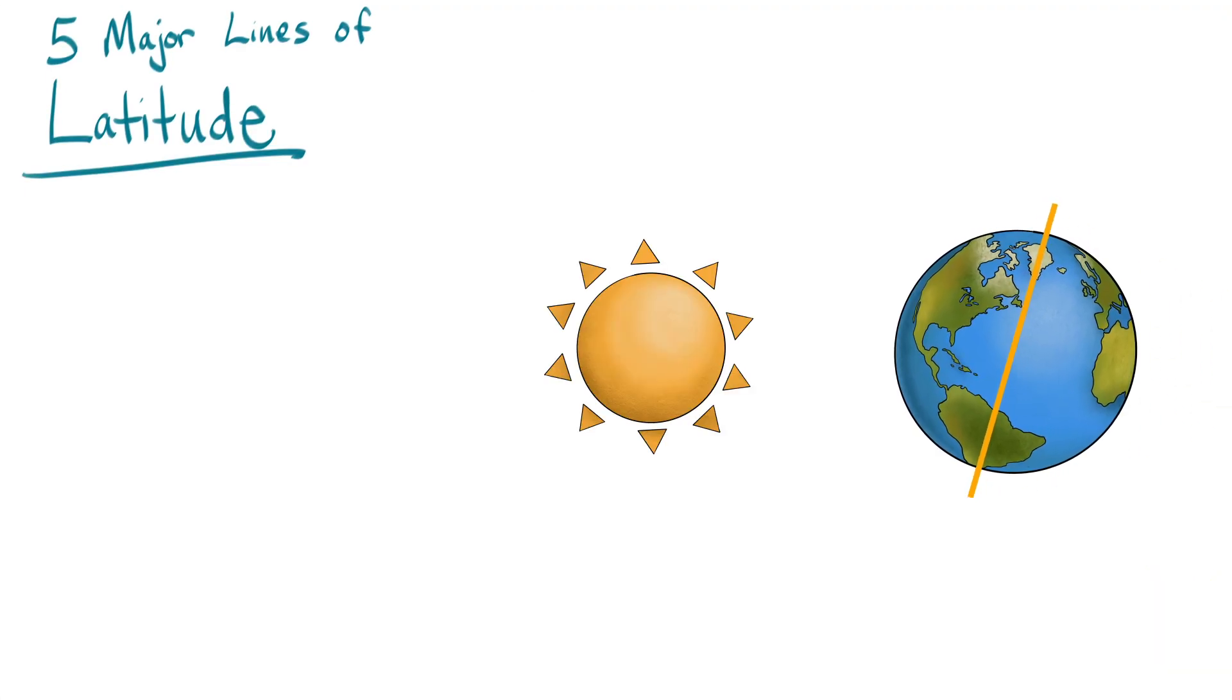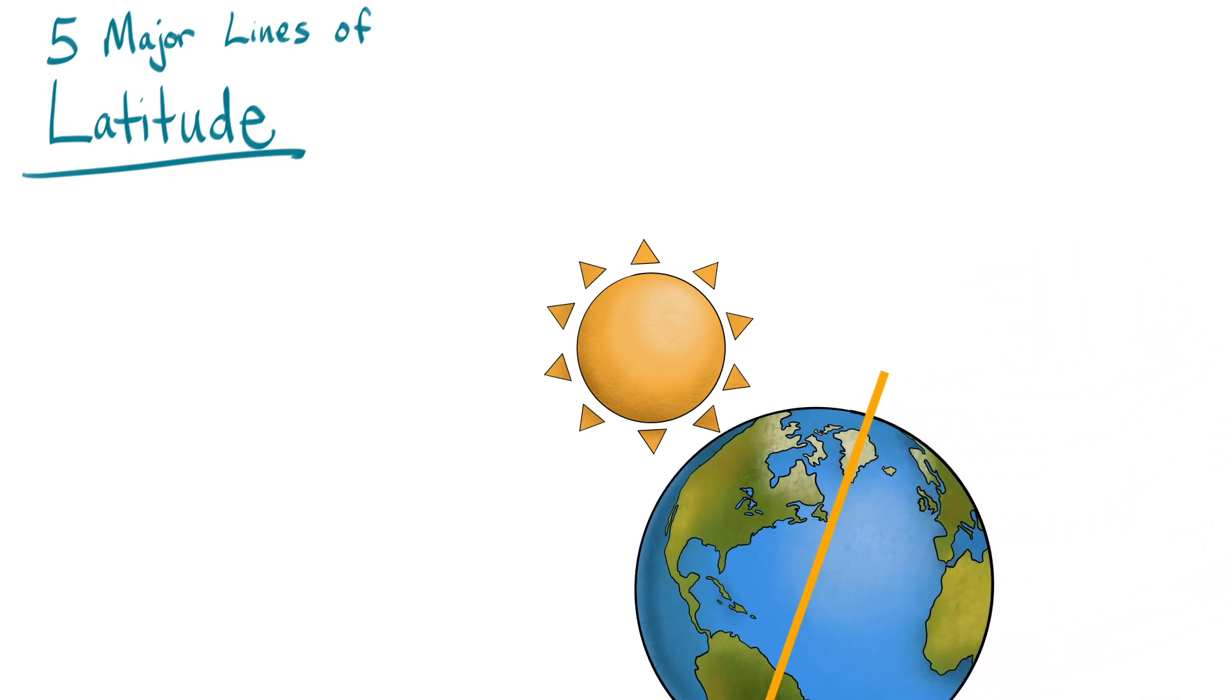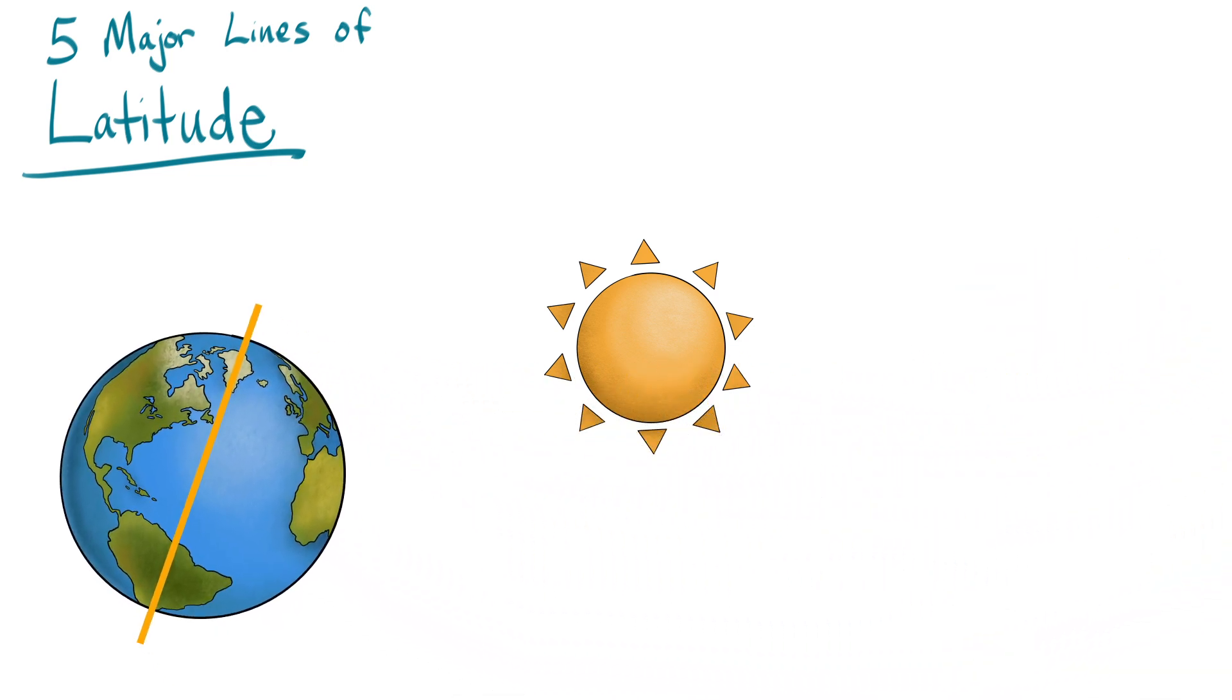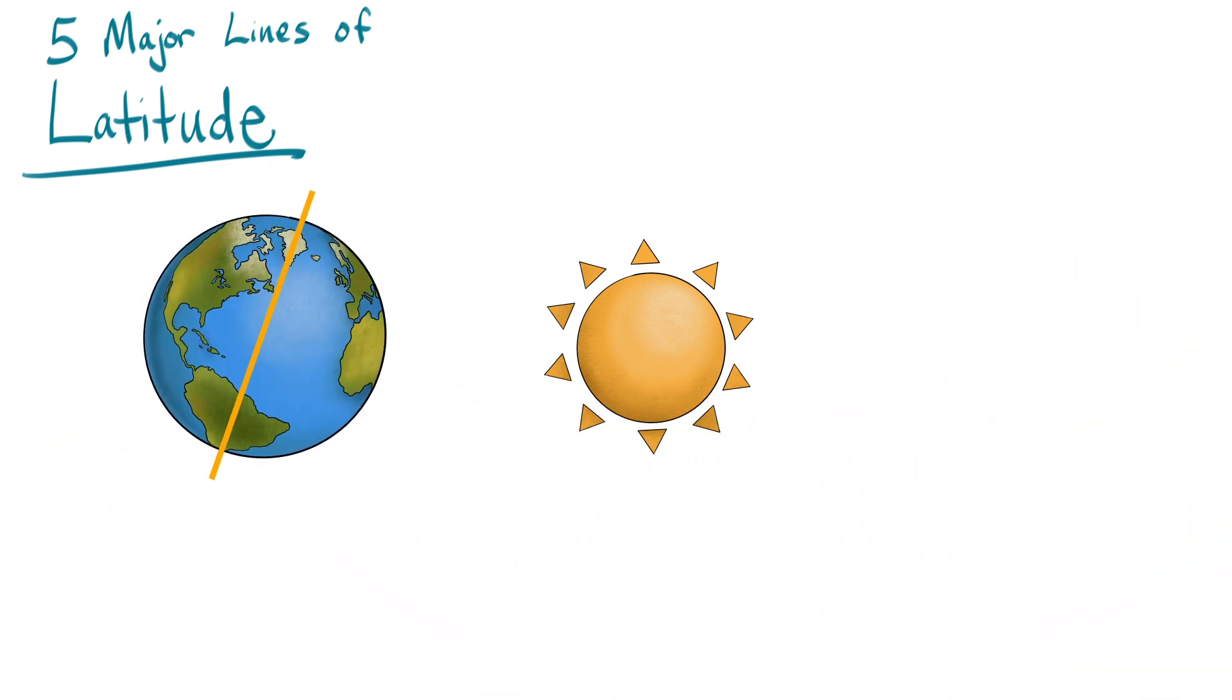Because the axis of the Earth is slightly tilted, as the Earth goes around the Sun, we get seasons. When the top part of the Earth is tilted towards the Sun, it is summer. When that part is tilted away from the Sun, that is winter. But because the equator is in the middle, it gets sunlight no matter what.